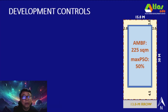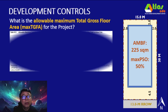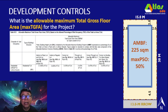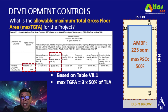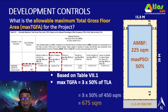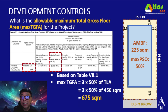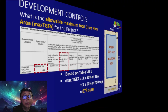To compute the allowable maximum TGFA, the reference is Table 7.1. For an R1 inside lot, the maximum TGFA is 3 times 50% of the TLA. The 3 represents the building height limit in number of floors. So 3 × 225 square meters (the AMBF) gives a maximum TGFA of 675 square meters — the same value as the maximum GFA.